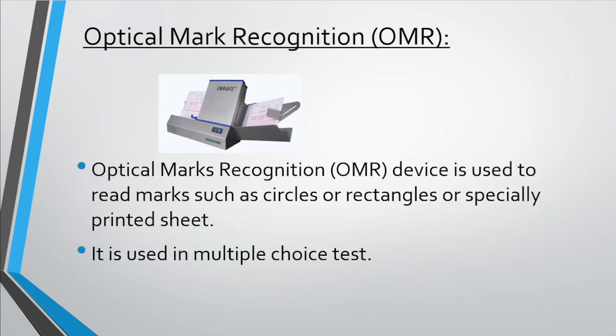Next is optical mark recognition (OMR). A device used to read handwritten marks such as circles or rectangles on a specially printed sheet. It is used in multiple choice tests where there are four options — A, B, C, and D — for every question. After marking answers, the OMR sheet is scanned in an OMR scanner. The OMR scanner scans the sheet using a light beam and the result of the test is calculated.